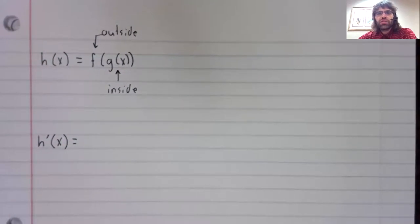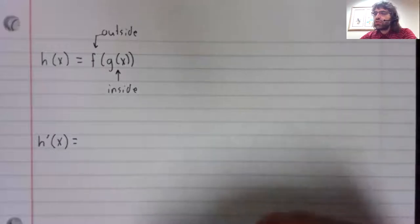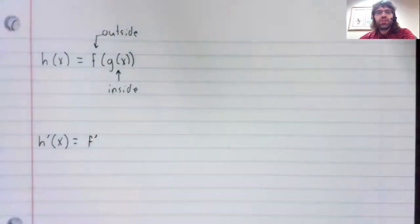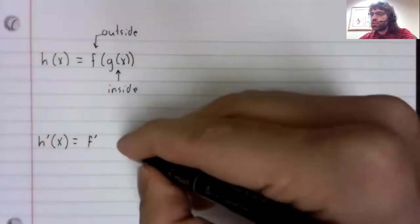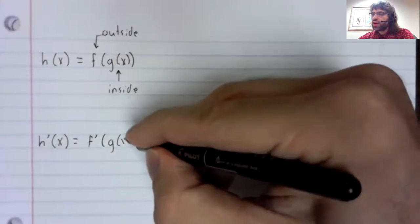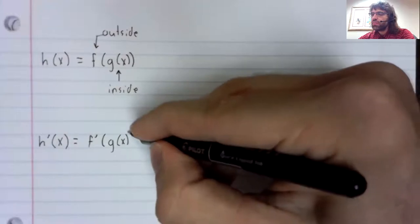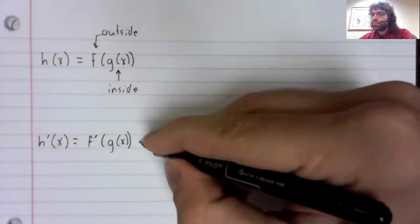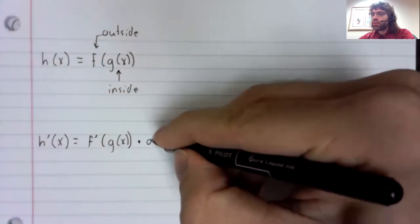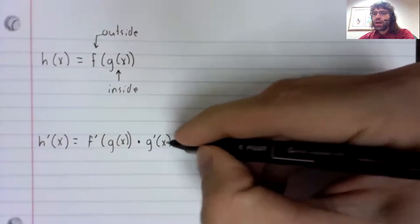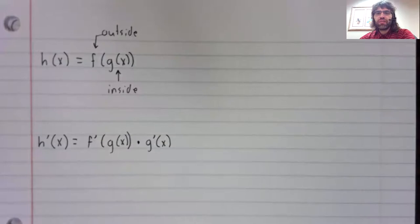The chain rule says to take this derivative, you differentiate the outside function. You stick the inside function inside of the derivative. And then you multiply by the derivative of the inside function.